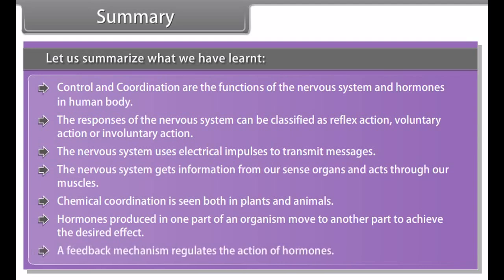Control and coordination are the functions of the nervous system and hormones in the human body. The responses of the nervous system can be classified as reflex action, voluntary action, or involuntary action. The nervous system uses electrical impulses to transmit messages and gets information from our sense organs, acting through our muscles. Chemical coordination is seen in both plants and animals. Hormones produced in one part of an organism move to another part to achieve the desired effect, and a feedback mechanism regulates the action of hormones.